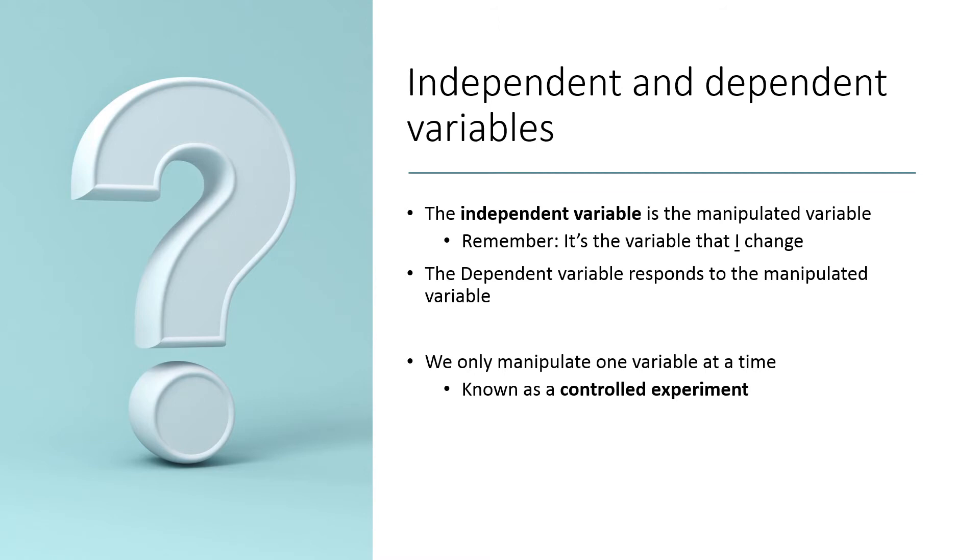I've just used two terms that I hope you're familiar with. The independent variable is the variable that you'll be manipulating. Remember it this way: the independent variable is the variable that I change. The dependent variable is a response to that changing independent variable. It's very important that you only have one independent variable per experiment, because if you had two, you wouldn't be able to definitively say if the outcome was caused by the first or the second independent variable.